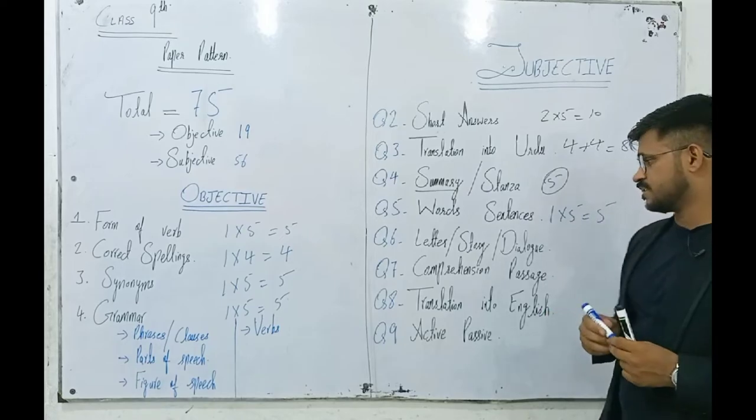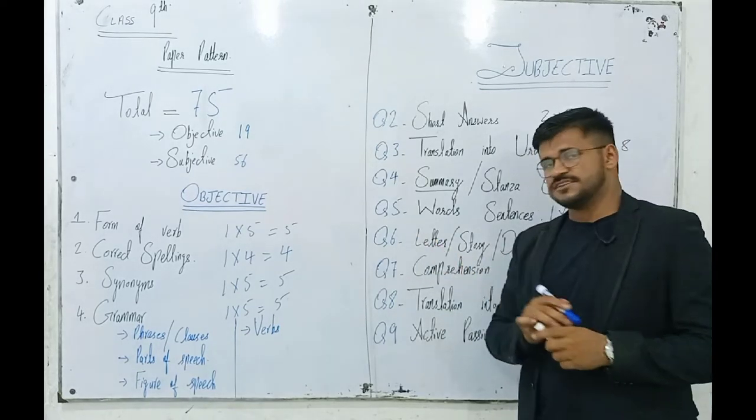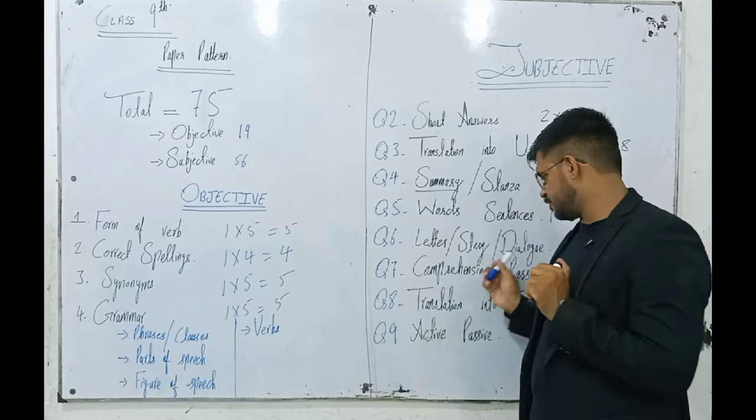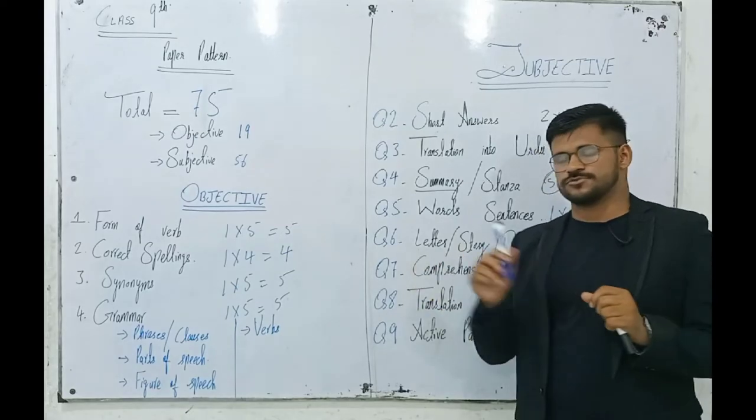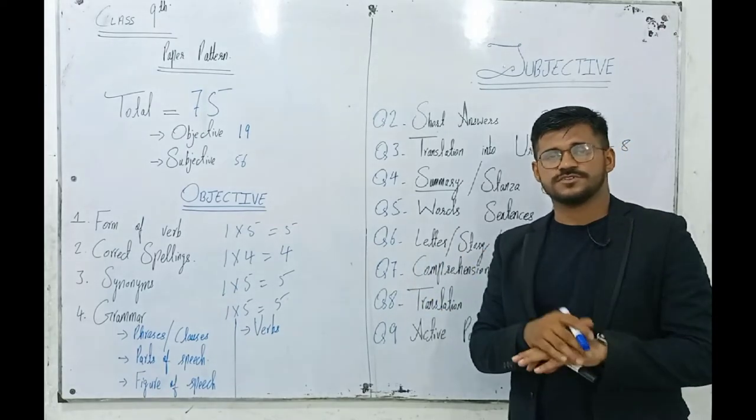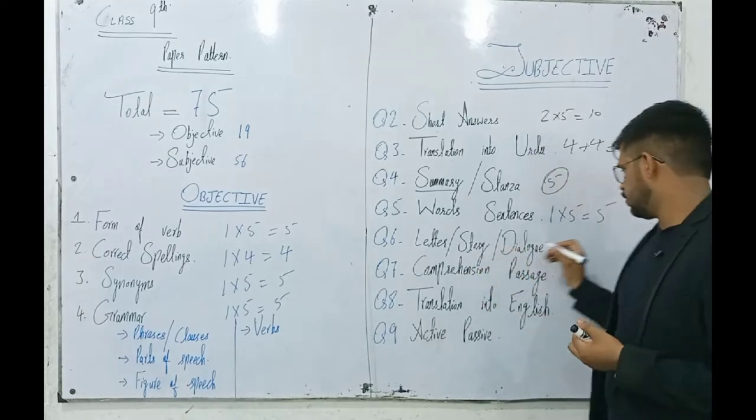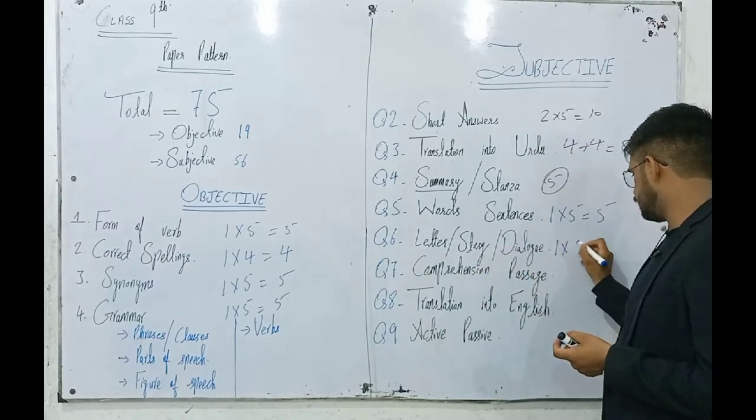Next, question number 6. We have one story, one dialogue, and one letter. We can choose any one. This is 1 multiplied by 8, total 8 marks.